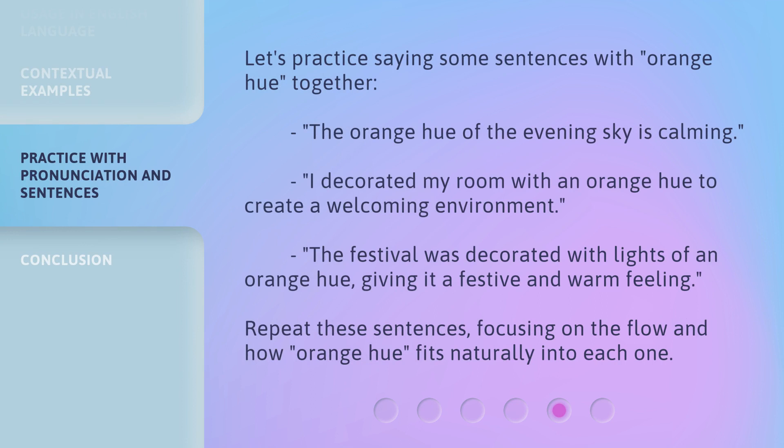Let's practice saying some sentences with 'Orange Hue' together. 'The orange hue of the evening sky is calming.' 'I decorated my room with an orange hue to create a welcoming environment.' 'The festival was decorated with lights of an orange hue, giving it a festive and warm feeling.' Repeat these sentences, focusing on the flow and how 'Orange Hue' fits naturally into each one.